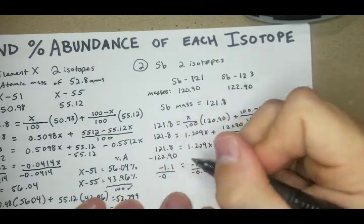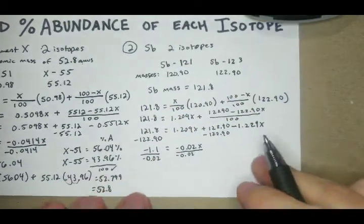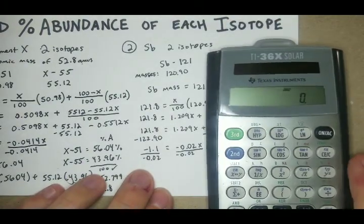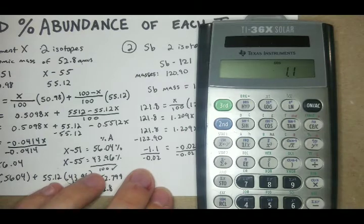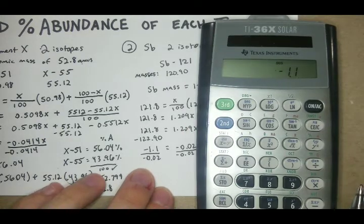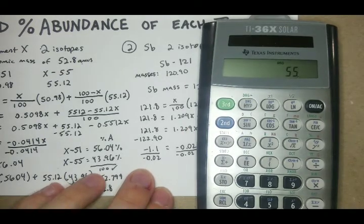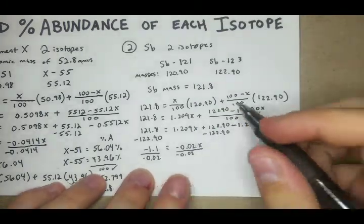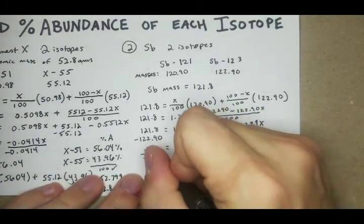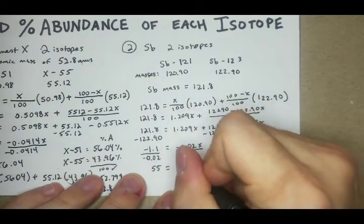Make sure to add those negative signs if you're going to be dividing. We have negative 1.1 divided by negative 0.02 equals 55, a nice whole number. So we have 55 equals X.